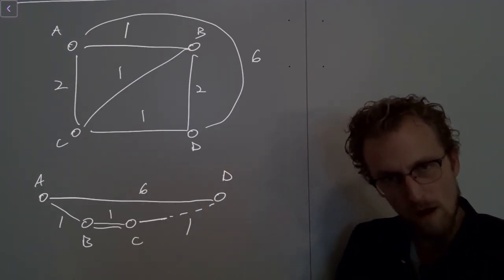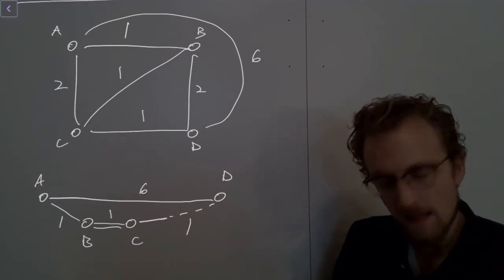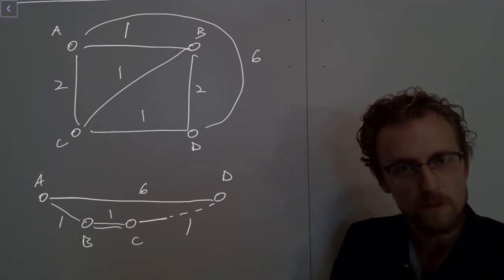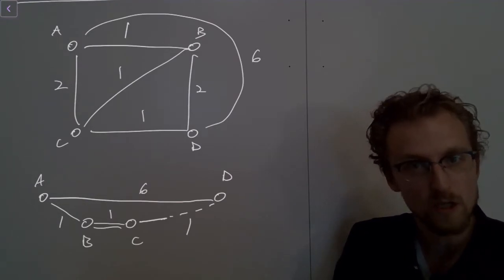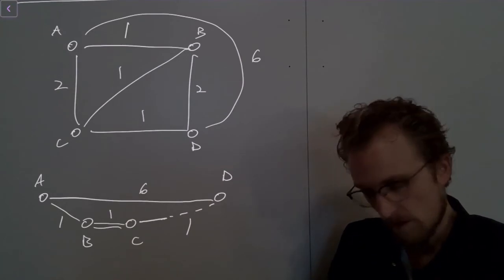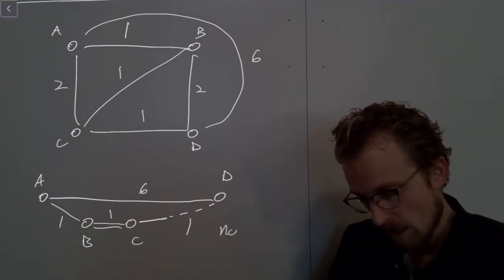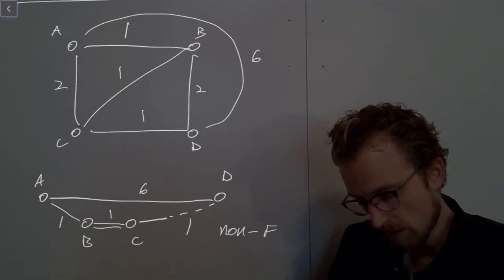So this graph doesn't really make sense from a geometrical standpoint, at least in the sense that if we want these numbers on the graph, if we want the edge weights to correspond to physical distances in a plane. This graph, this is a nonsensical graph. This is a non-Euclidean graph.